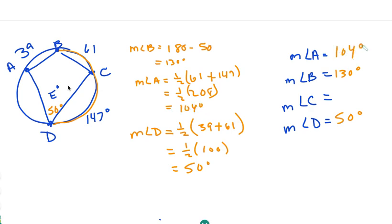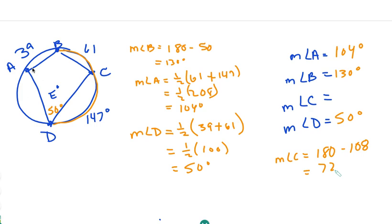And I know that angle C is opposite angle A in the quadrilateral. So the measure of angle C is going to equal 180 minus 104, which equals 76 degrees.